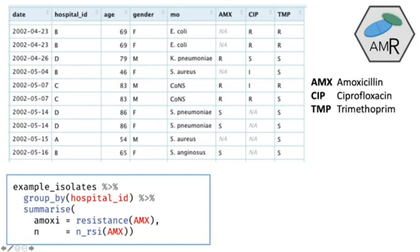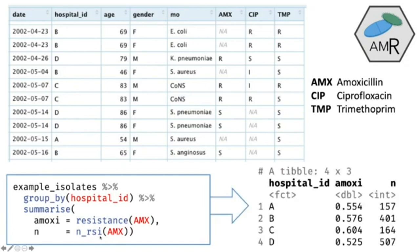With only a couple of lines of tidy-style syntax, you can take our example dataset, group by hospital, and summarize where we calculate the resistance to amoxicillin, with n_RSI counting the number of isolates where there's a valid result — resistant, susceptible, or intermediate. The result shows immediately that for hospital A there is an empiric resistance to amoxicillin of 55.4% based on 157 isolates.